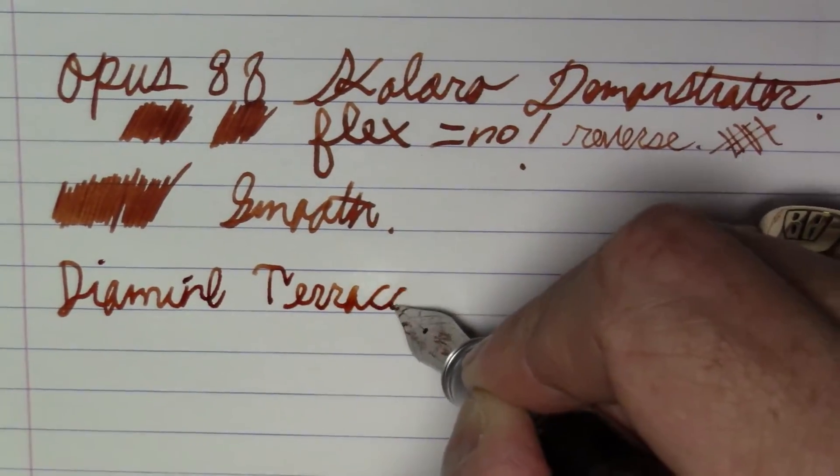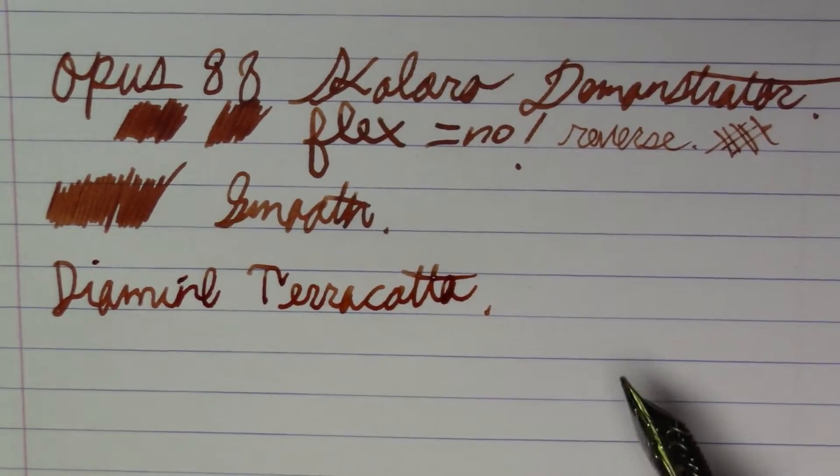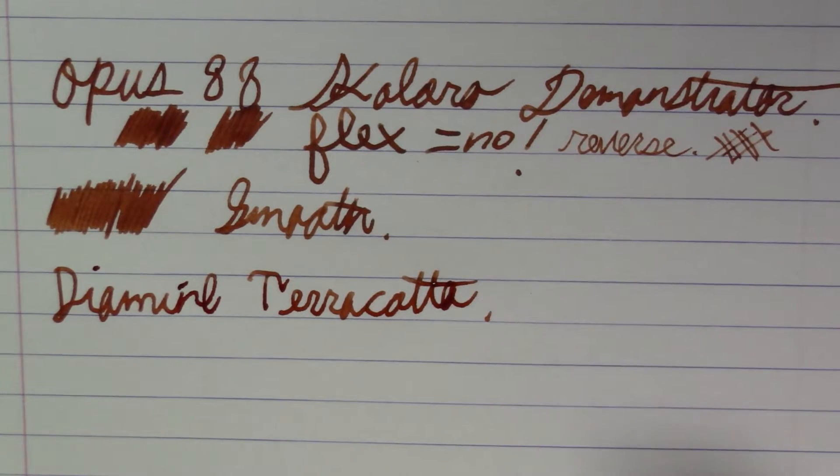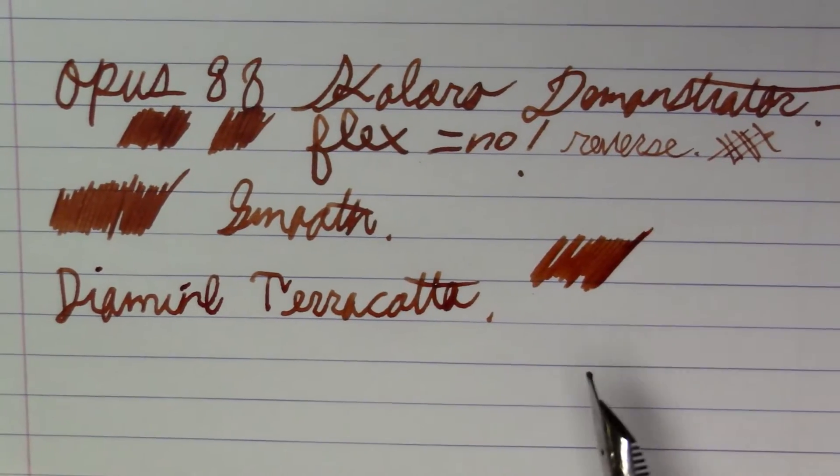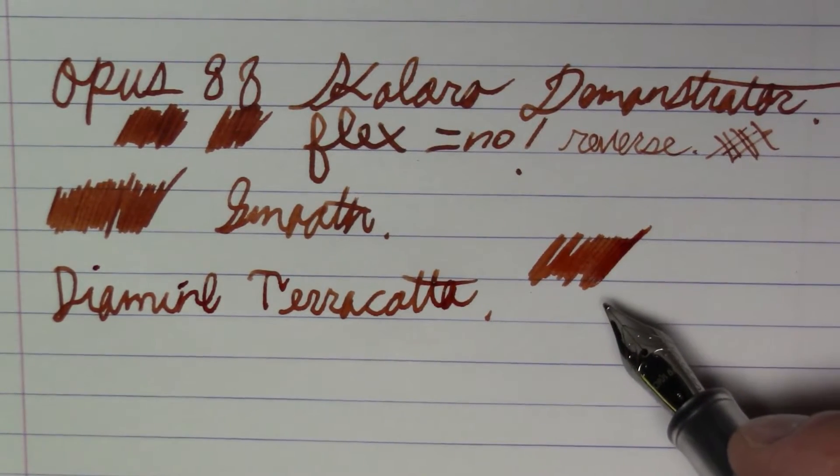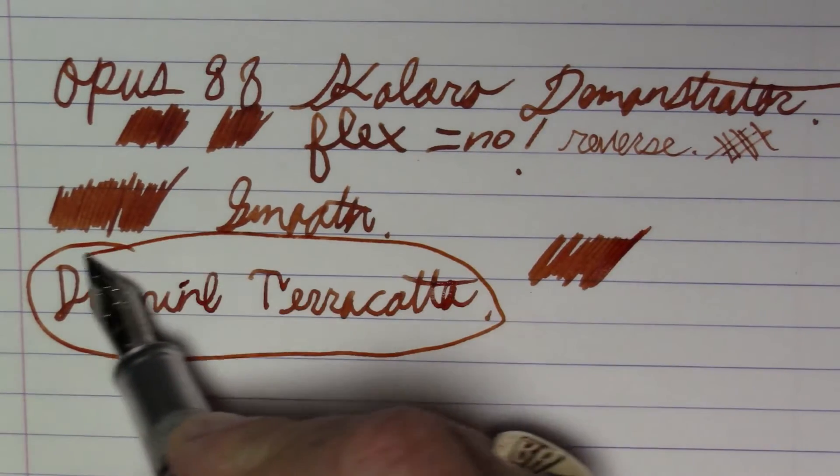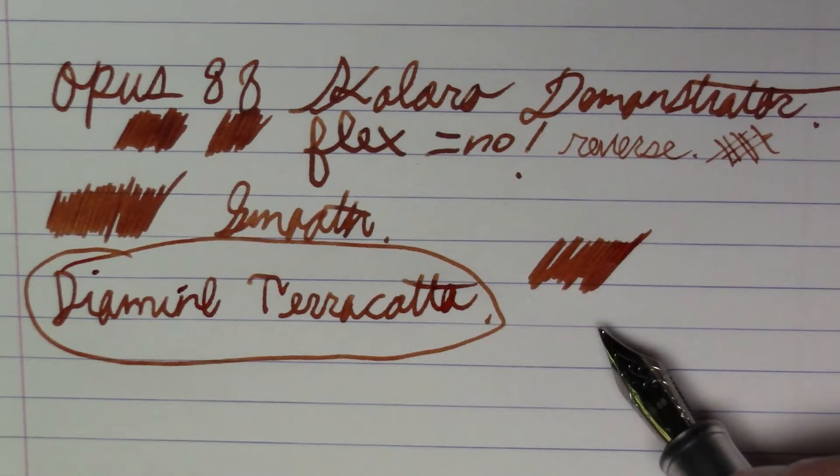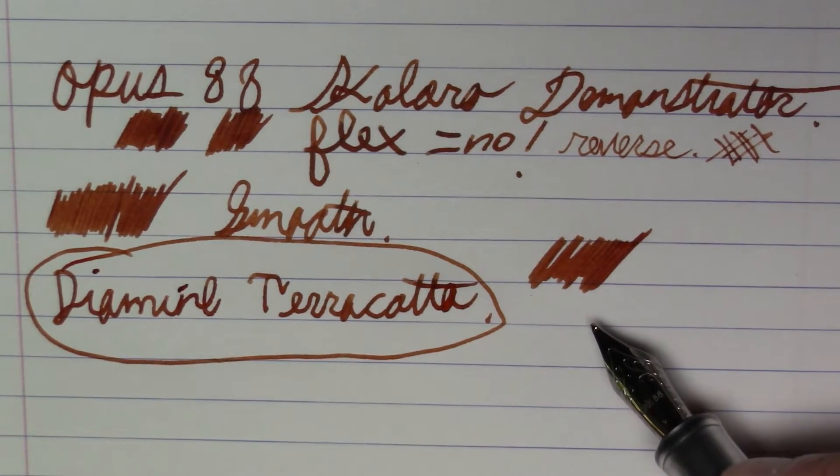In terms of ink, this is Diamine Terracotta, which is a really nice dark brown color. Not a lot of shading here, just a little bit, but it's dark, it's saturated, it's contrasty. It looks really good. I like this color quite a bit. It's a brown with character. It is, I think, a good name because I think terracotta is very descriptive. It does remind me of that sort of pottery clay color, and it is, I think, well named. So you're getting what they're advertising here.